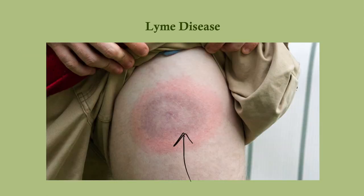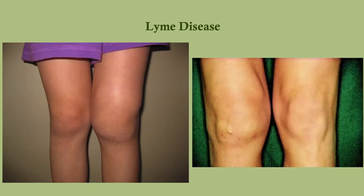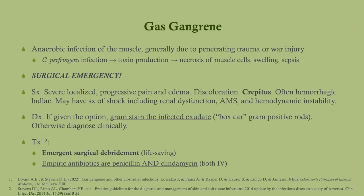This is erythema migrans — you will probably not see this in conjunction with joint issues, but it is the early presentation where the tick bite caused this targetoid lesion. The joint inflammation you would see in later-stage Lyme is mostly an effusion; it's not as red and angry as septic arthritis — this is an inflammatory arthritis.